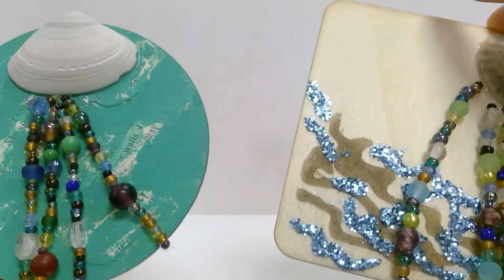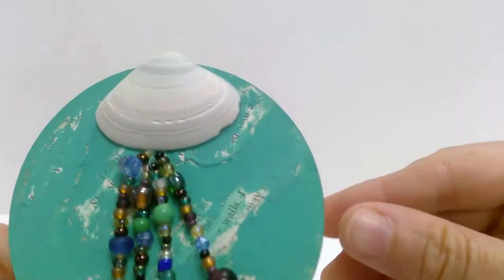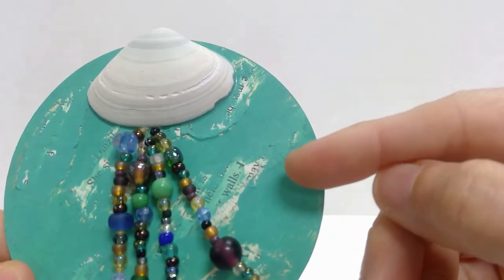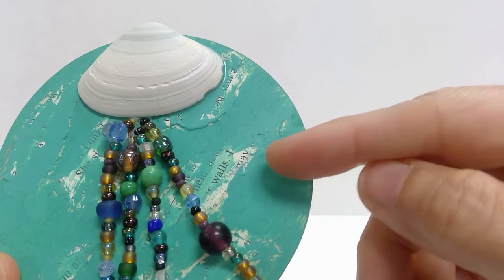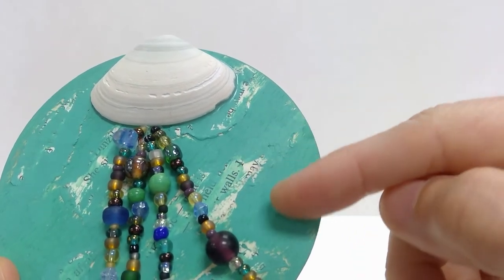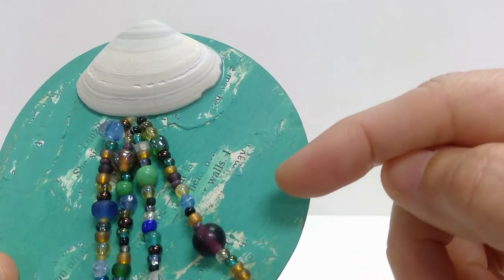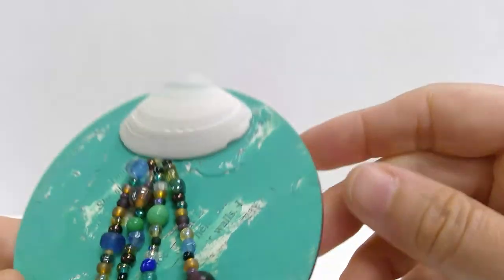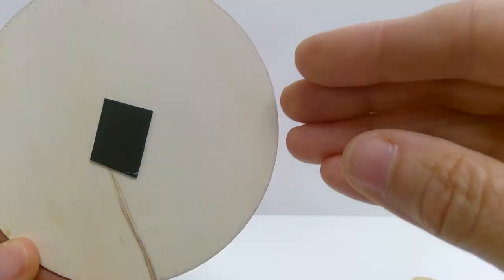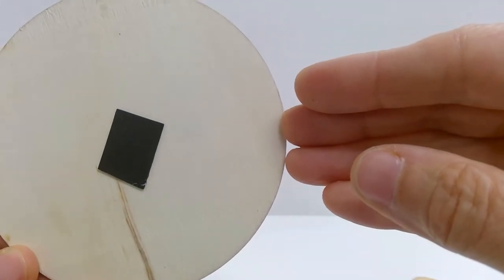Now optionally, you can do a few things first to decorate the surface of the coaster before you do the beads. In this one here, I've taken some book pages and ripped them up and glued them on there and then taken some paint and painted it on, and this particular one has a magnet on it so you can use it for like putting it on the refrigerator or something.